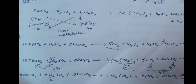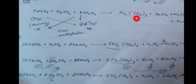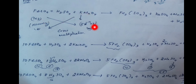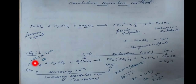Ferrous sulfate to ferric sulfate: removing one electron, increasing oxidation number — oxidation reaction. FeSO4 loses one electron per Fe; manganese gains five electrons. Fe2+ → Fe3+: one electron lost. MnO4-: five electrons gained.